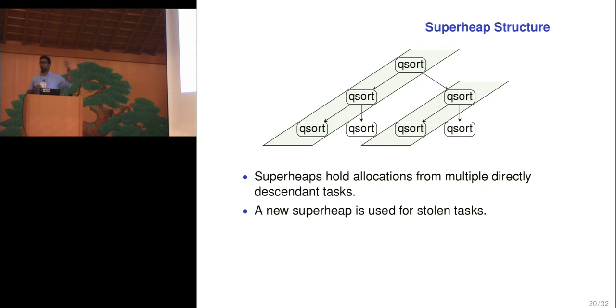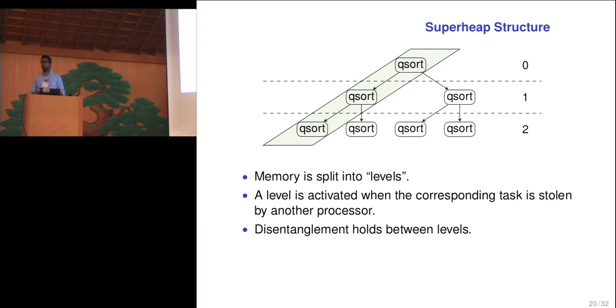We do this by consolidating memory into a structure that we call superheaps. Superheaps hold allocations from multiple directly descendant tasks. And a new superheap is created for stolen tasks. Since this is an expensive operation, we're deferring it to the steal time. Now this is all well and good, but if you remember, we want to be able to have every task work in its own heap, which means that we want to be able to determine which task allocated which object. So in order to do this, every superheap splits up all of its allocations into levels. Each level corresponds to a particular level in the task tree itself. So for example, in this gray superheap, we have three levels 0, 1, and 2. Each of these levels can be marked as activated when a corresponding steal happens. That means that the memory at that level is now shared among multiple processes. And finally, since these levels directly correspond to the levels in the task tree, within a single superheap, disentanglement holds between levels.